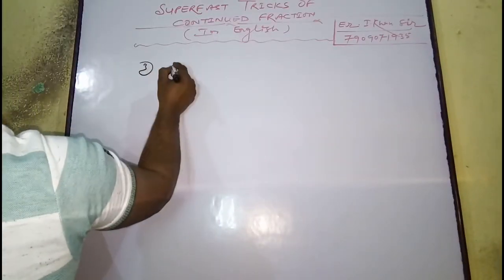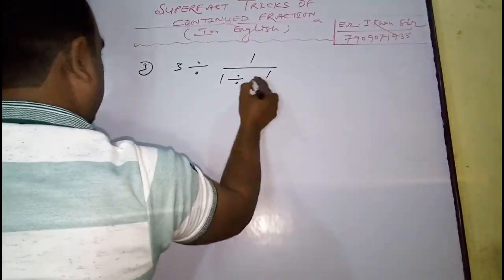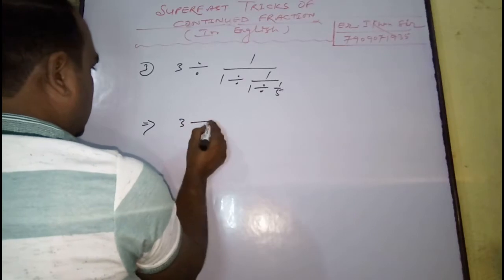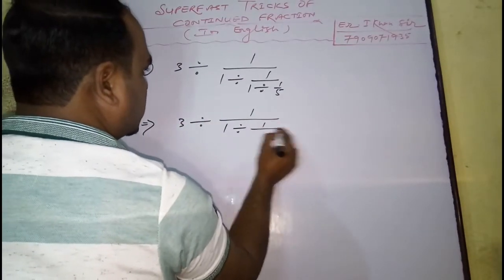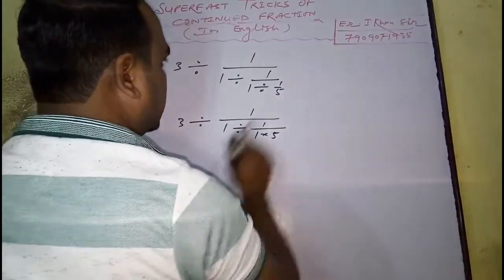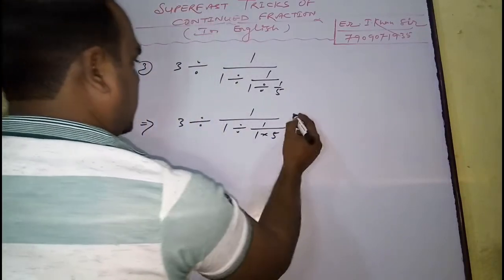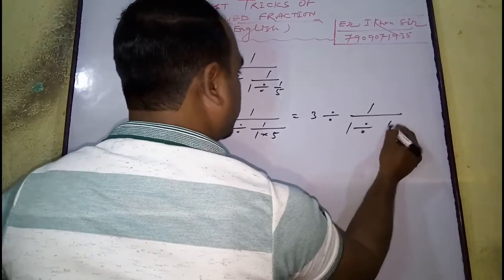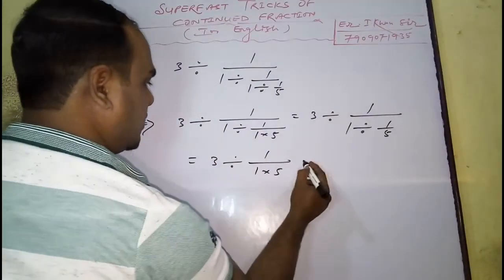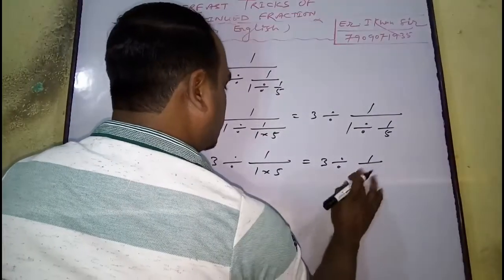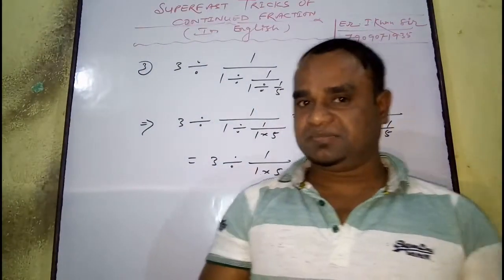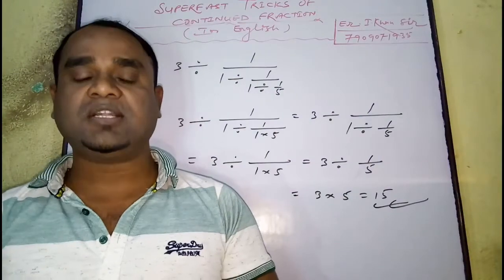Suppose you have to solve this continued fraction: 1 divided by 1 divided by 1 by 5. Whenever you change the division sign into multiplication, then it will be reciprocal, making it 5. Then 3 divided by 1 by 1 divided by 1 by 5 — this will reverse, you can write it as 1 into 5, which is 5. And now it will be written as 3 into 5, which is 15. And that will be your answer. This is a very simple trick.